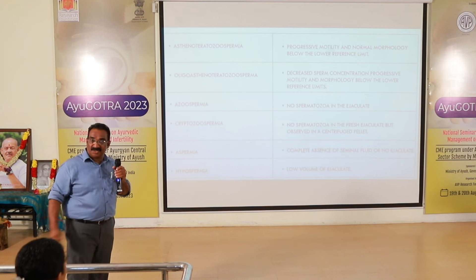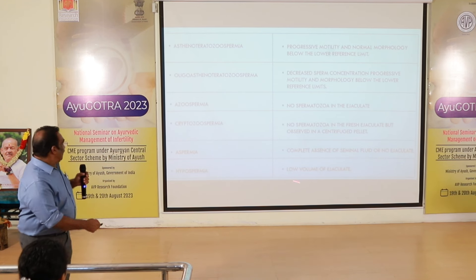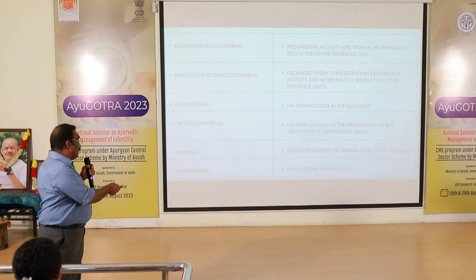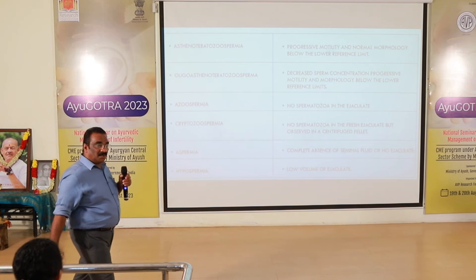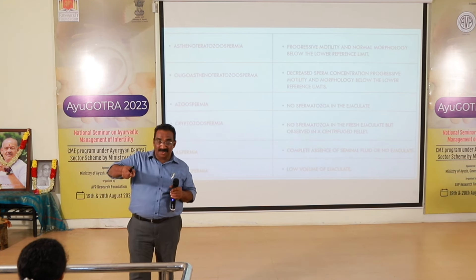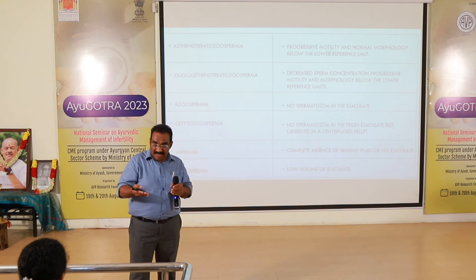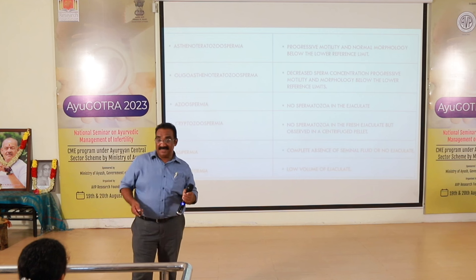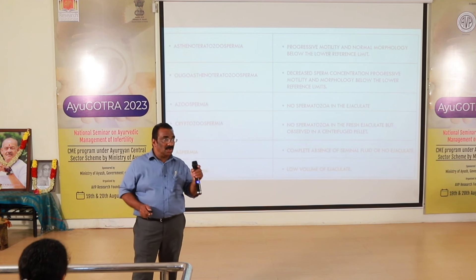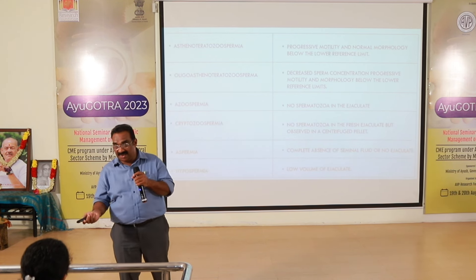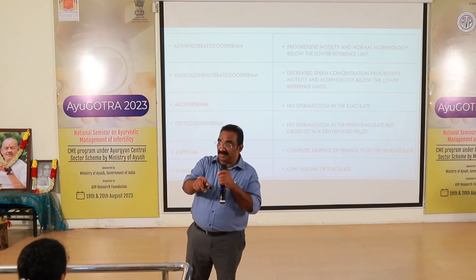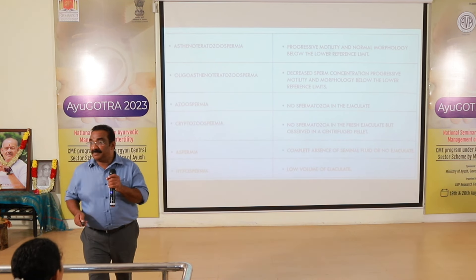Azoospermia means no spermatozoa in the ejaculate. Cryptospermia means no spermatozoa in the fresh ejaculate but observed in a centrifuged pellet. In the laboratory, after liquefaction, a drop is examined under the microscope. If no spermatozoa are seen, the patient should not immediately be declared azoospermic — the whole semen should be centrifuged and the pellet examined for even a single sperm before declaring azoospermia.